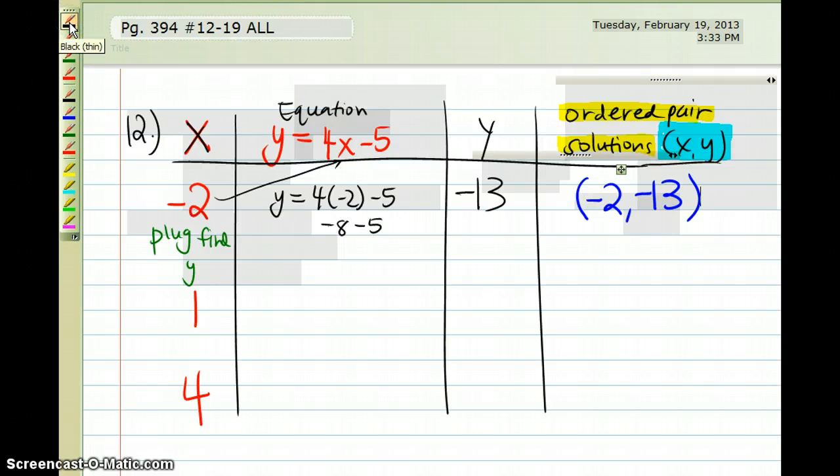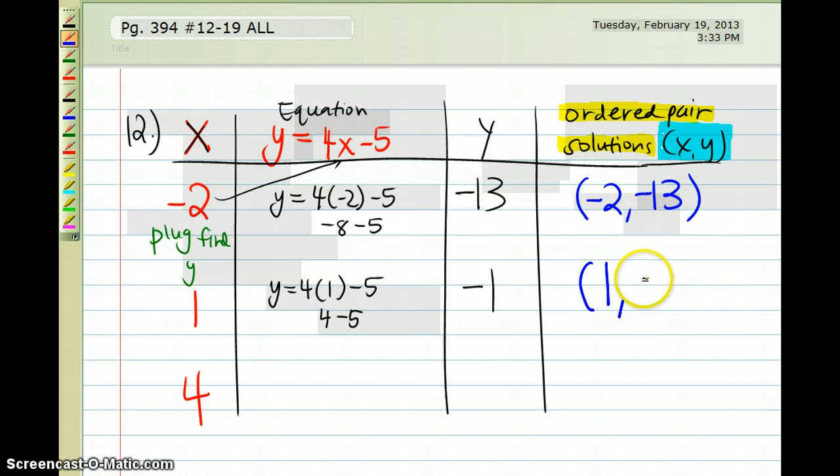So then I would do the same thing with 1. I would plug 1 into the equation, y is equal to 4 times 1 minus 5, and I would work that out with PEMDAS. 4 times 1 is 4 minus the 5. 4 minus 5 is going to give me negative 1. So my second solution, when I plug in 1 for x, the y pair with it is negative 1. So that's my second solution for this question.